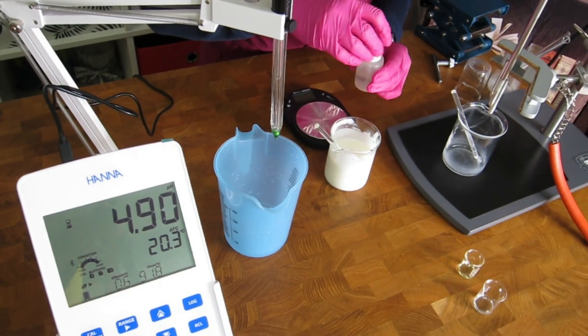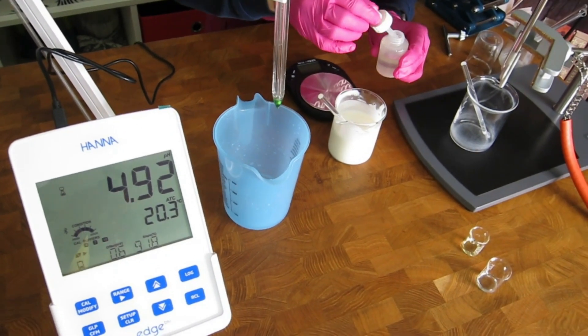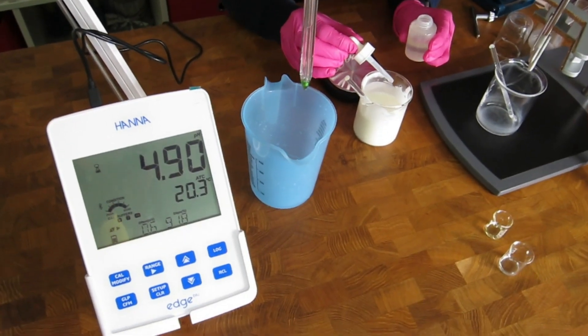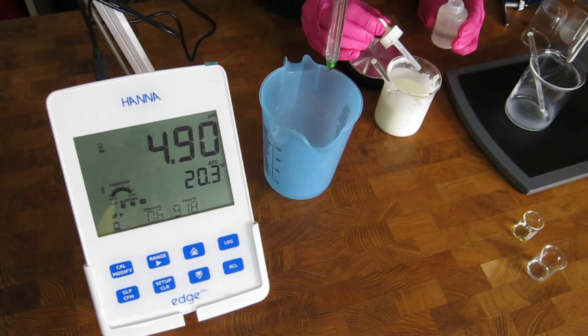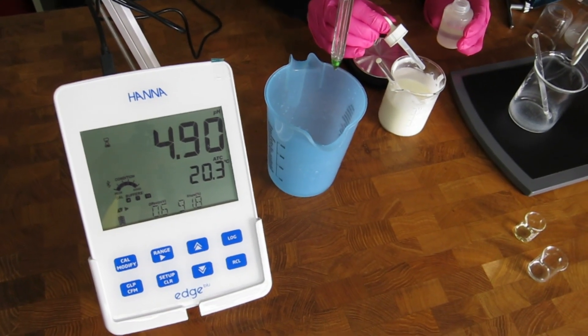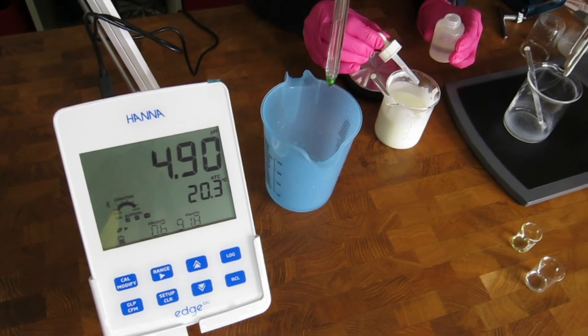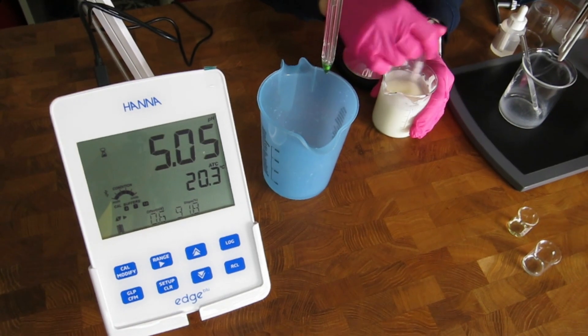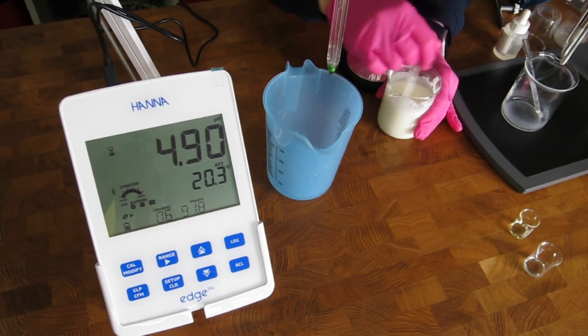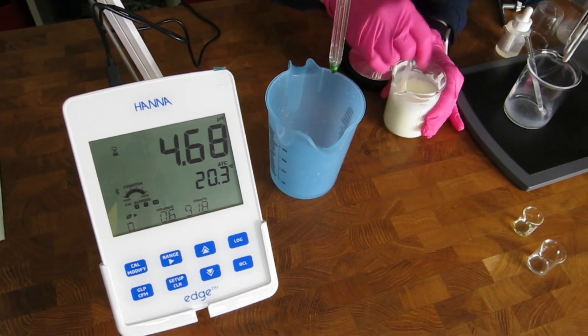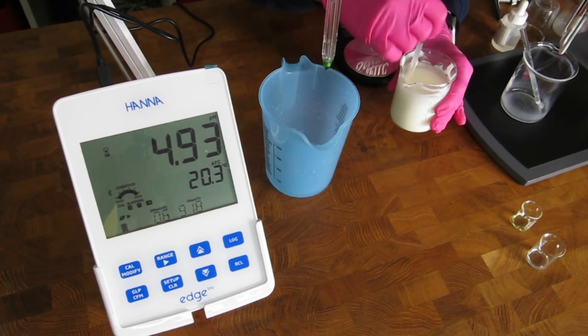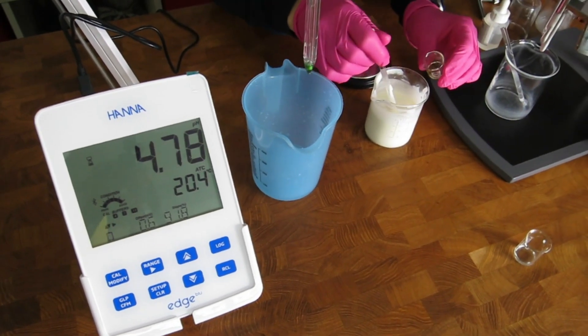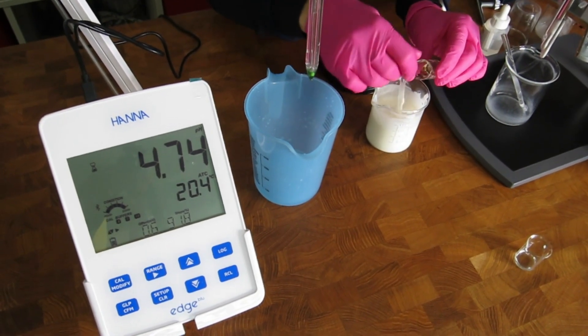We will now add lactic acid to the emulsion to reduce the pH. Since we have cheated earlier and prepared this emulsion several times, we know how much we need to add. When you are making the formulation for the first time, you have to go slowly and add the lactic acid gradually, so that you don't jump to the other side of the pH scale. So we can now add the essential oil, the preservative, and then prepare another 10% dilution and re-measure the pH.